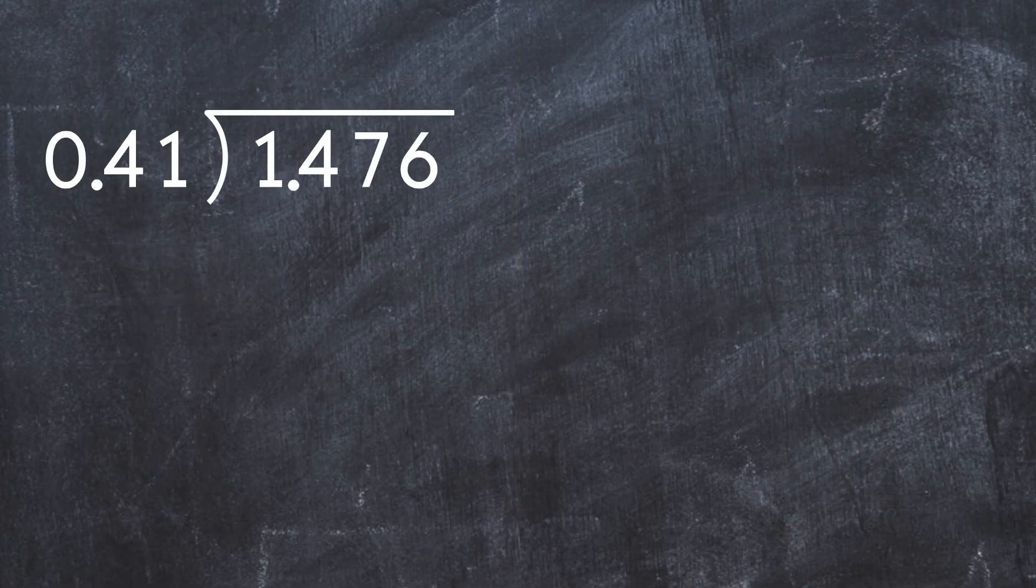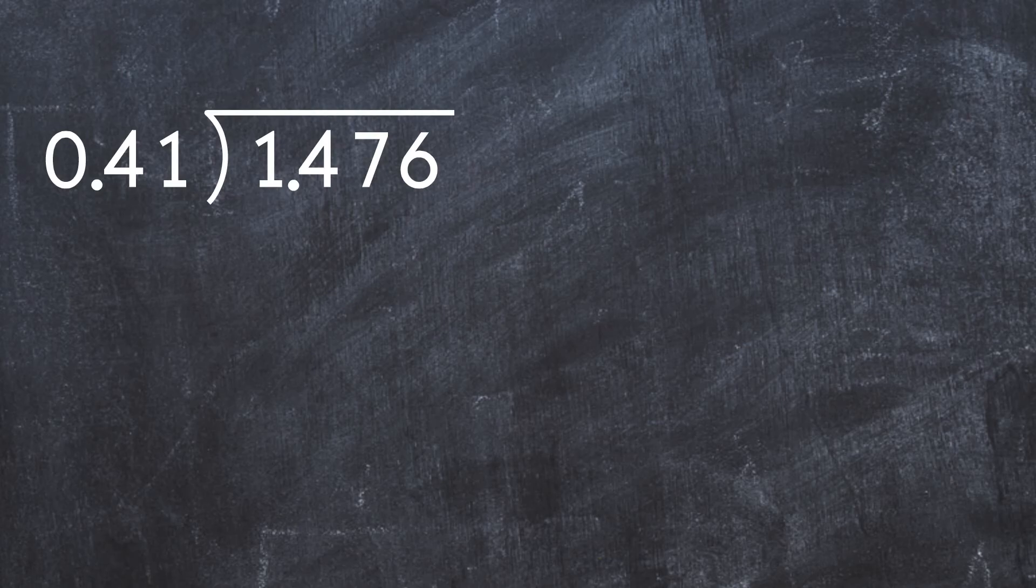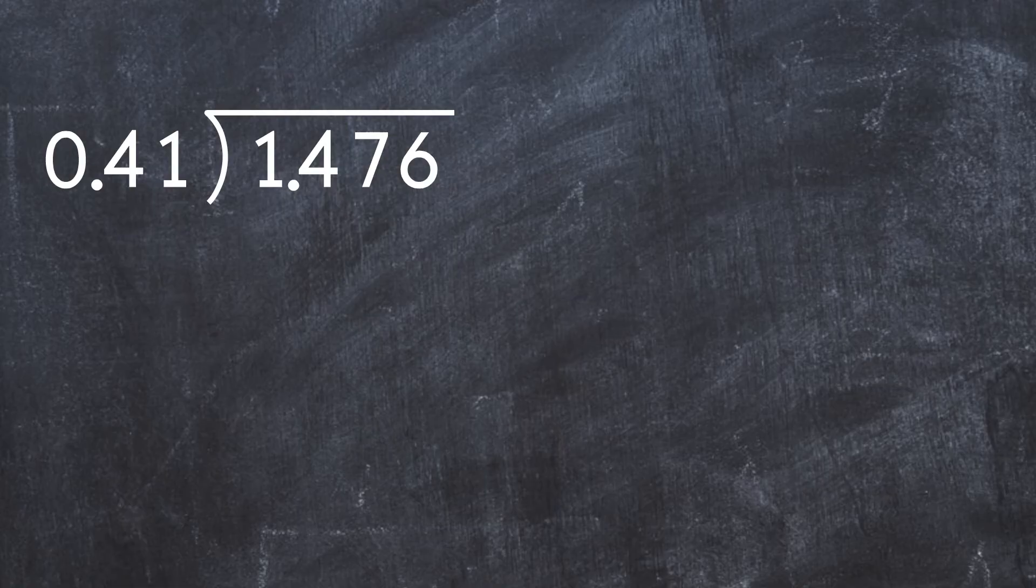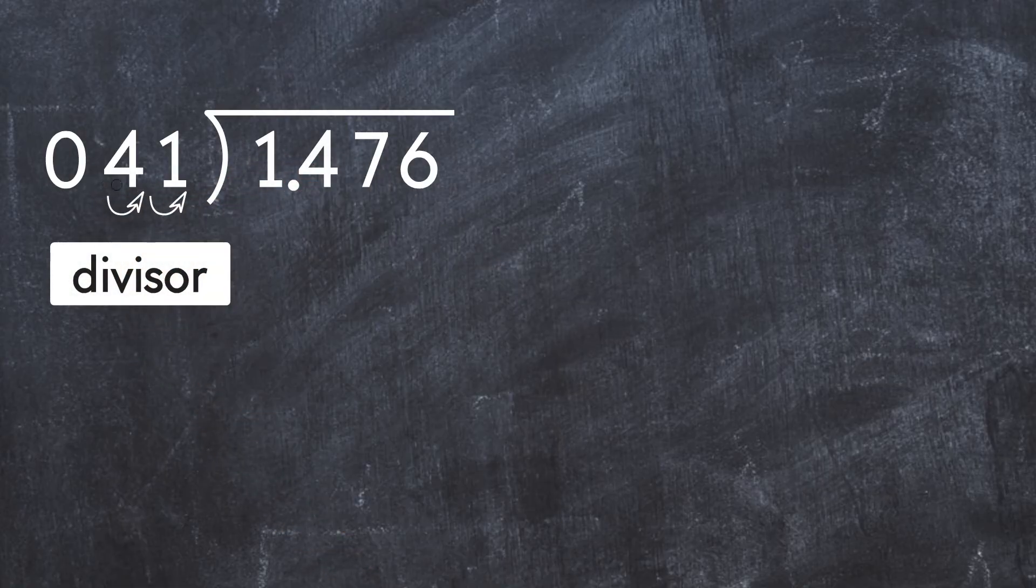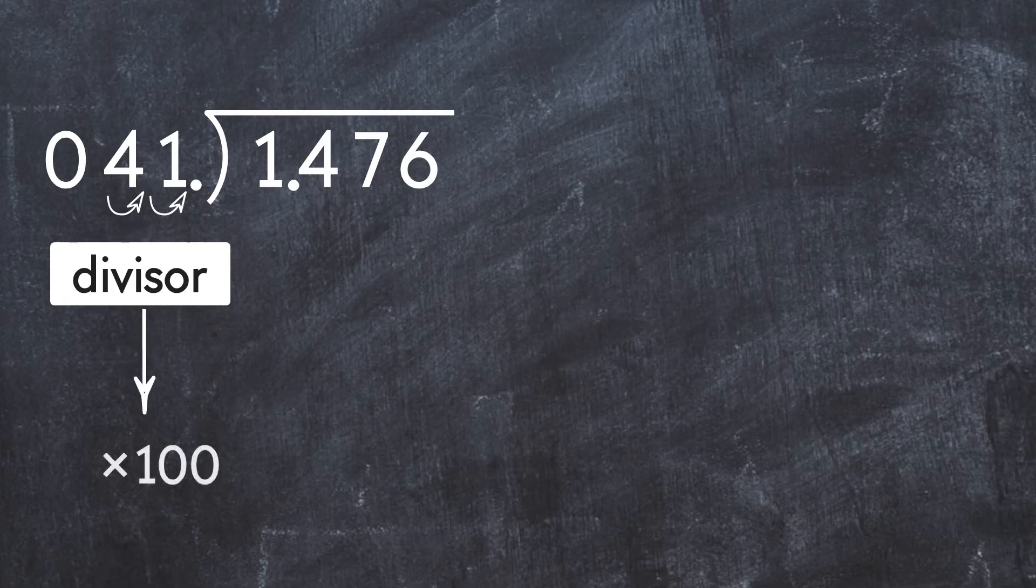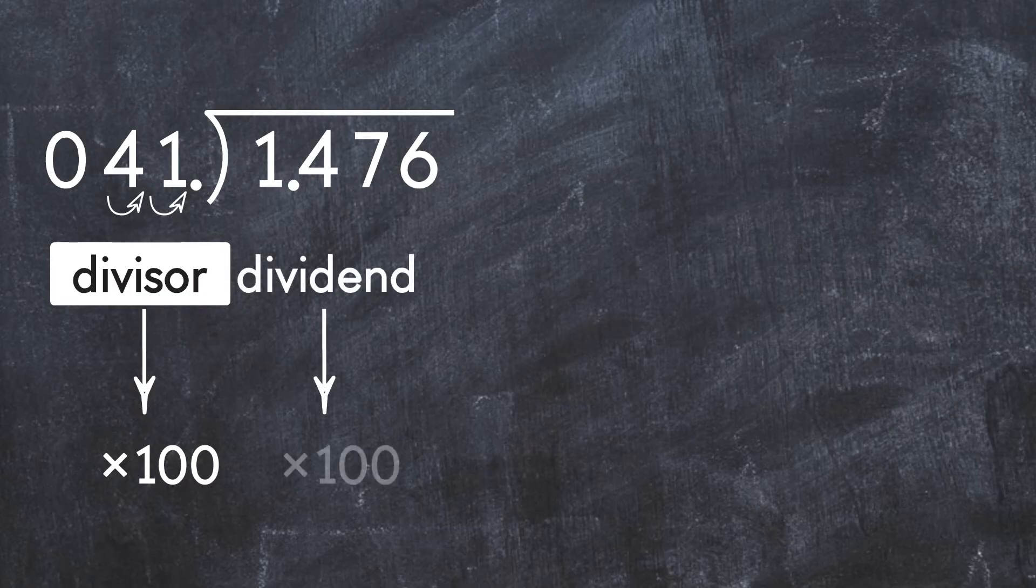Let's do another example. 1.476 divided by 0.41. To turn the divisor into a whole number, we need to move the decimal point two places to the right. We do this by multiplying by 100. We also have to multiply the dividend by the same number, 100.